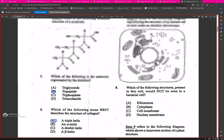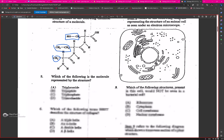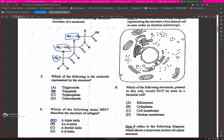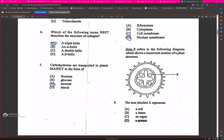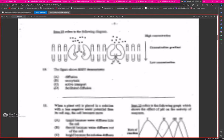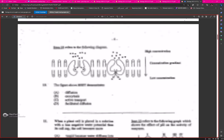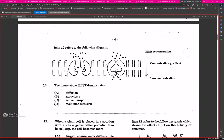Number eight: which of the following structures present in this cell would not be present in a bacterial cell? Number nine asks what X would be representing: cell, tissue, organ, or system. The figure above best describes facilitated diffusion.